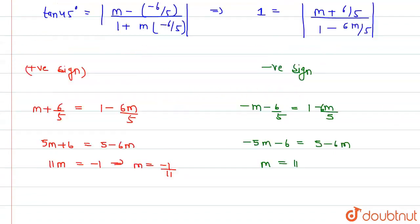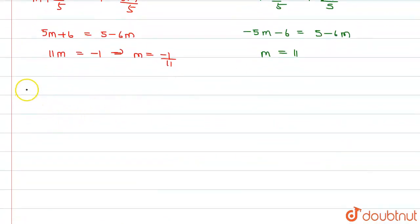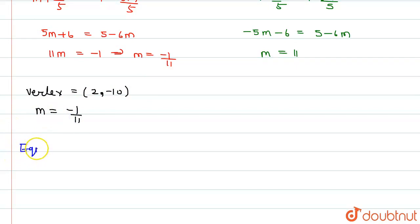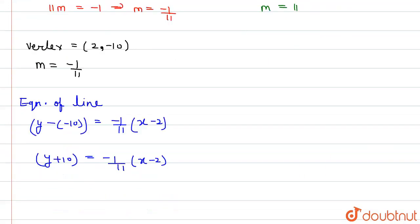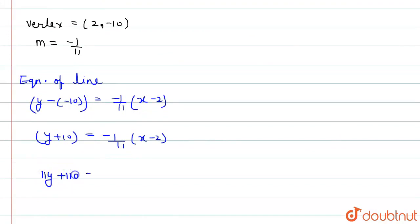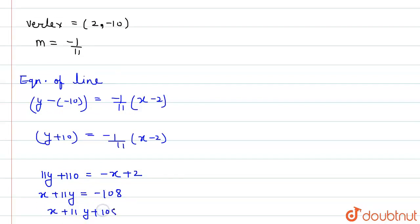We have the point (2, -1) and slope m = -1/11. Using the equation of a line y - y₁ = m(x - x₁): y - (-1) = (-1/11)(x - 2), which gives 11y + 11 = -x + 2, so x + 11y + 9 = 0. The equation of the first line is x + 11y + 9 = 0.